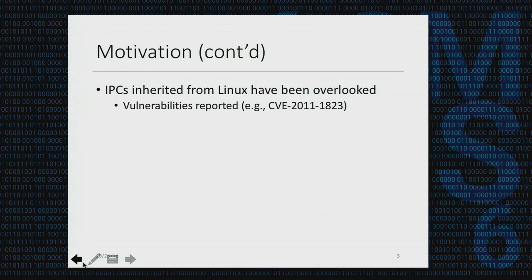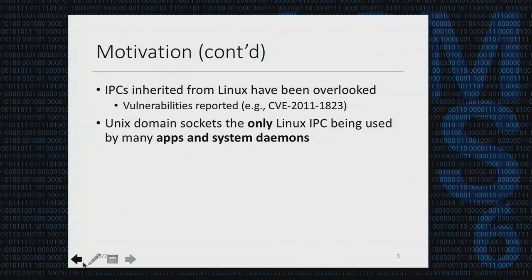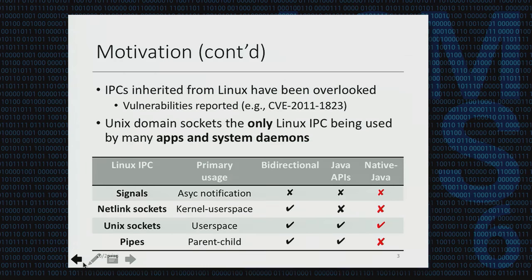We have seen several vulnerabilities reported that exploit insecure Linux IPC channels on Android. For example, CVE-2011-1823 reported that a daemon allows local users to execute arbitrary code and gain root access. Among all Linux IPCs available on Android, Unix domain sockets are the only ones being widely used in apps and system daemons. We found that Unix domain sockets are the only option that could support bi-directional communication, have Java APIs provided by the framework, and are good for cross-layer communication, especially across the Java and native layers.